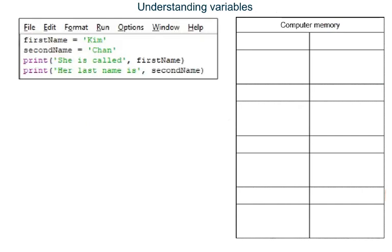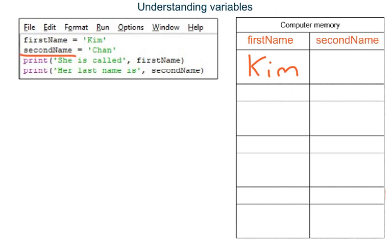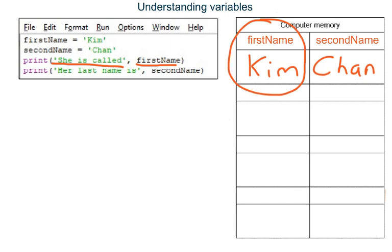The first two lines of this program are exactly the same as in the first program. Line 1 creates a new variable named first name. Line 2 creates a new variable named second name. Line 3 outputs the string she is called, and then looks up what is stored in variable first name.